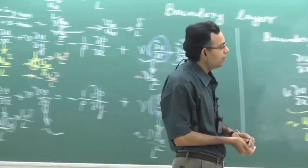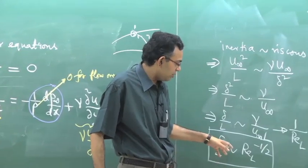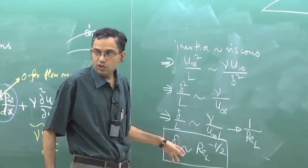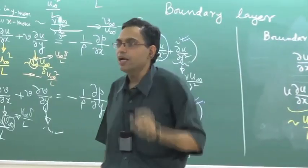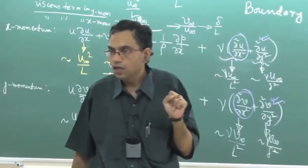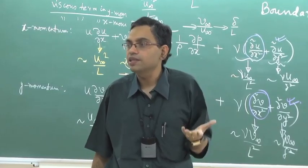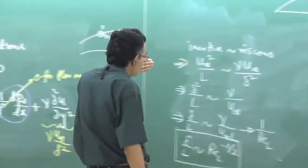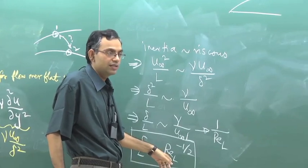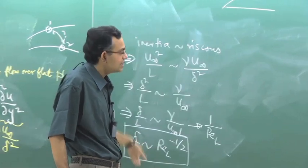Without a lot of mathematics — just elementary scaling — we have concluded what delta/L is. As an engineer, when can you conclude that boundary layer theory is valid? If delta is much less than L, then Reynolds number must be large. For the boundary layer theory to be valid, Reynolds number must be large. If Reynolds number is large, only then is delta/L small.